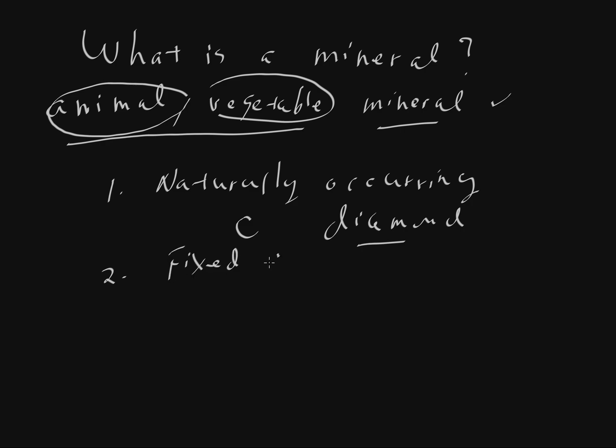Now another part of the definition is that minerals have a fixed composition. And what that really means is that we can write a formula. So we've written a formula here. Carbon is the formula for diamond. We can write something a little bit more complex. So the formula SiO2 is the formula for the mineral quartz.